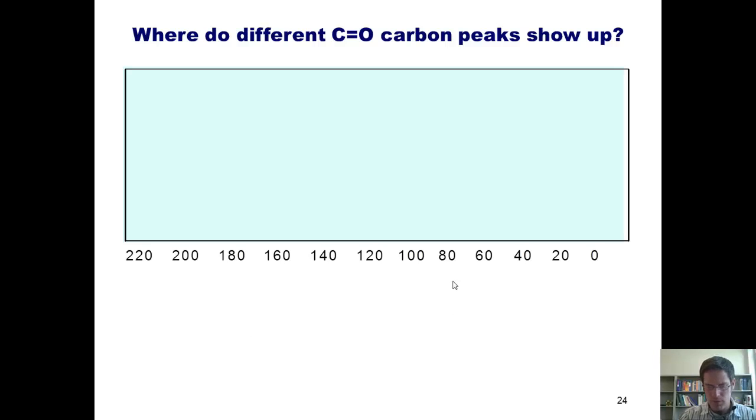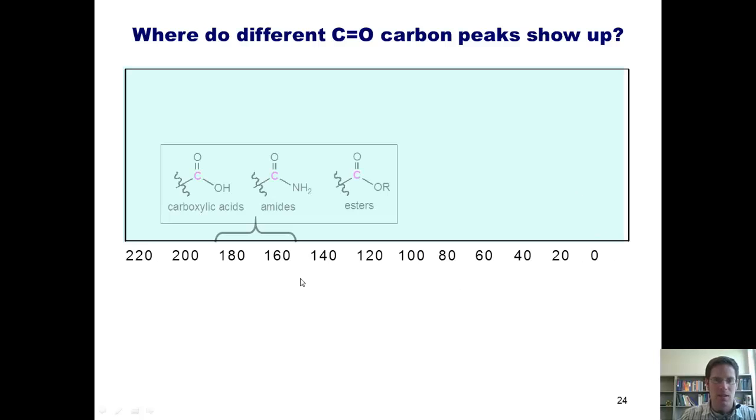So where do different carbonyl signals appear on carbon NMR? Remember that the carbon NMR spectrum goes from about 0 to 220 ppm. So as I said in the previous slide, I want you to remember carboxylic acids, amides, and esters. These kinds of carbons that are highlighted in pink generally appear about 160 to 180 ppm.